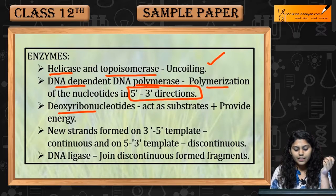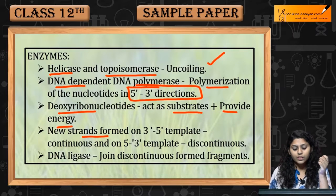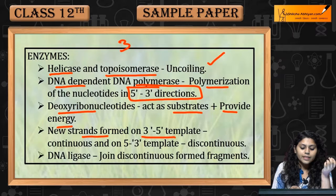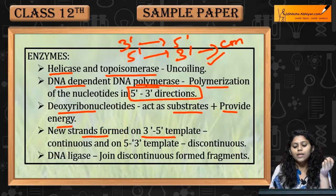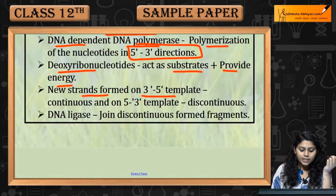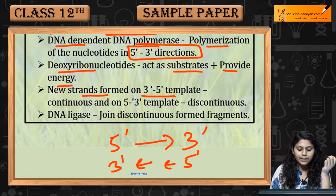Deoxyribonucleotides act as substrates and provide energy. The new strand that forms on the 3-to-5-end template is continuous, where a 5-to-3-end strand is built. On the opposite template running 5-to-3, a discontinuous strand is formed.